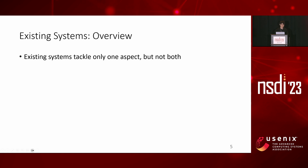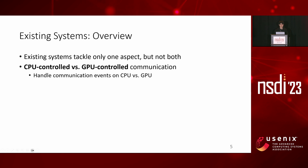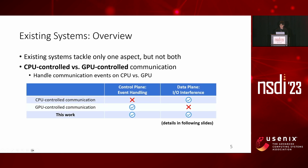Unfortunately, existing systems tackle only one aspect but not both. In this work, we classify existing systems into two categories, CPU-controlled or GPU-controlled communication, according to whether communication events are handled by CPU or GPU. This table compares existing systems with this work. CPU-controlled and GPU-controlled communications suffer from either event handling or I/O interference overhead, while our work tackles both overhead at the same time.